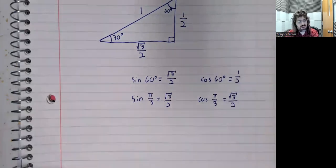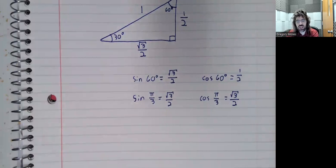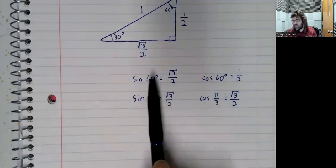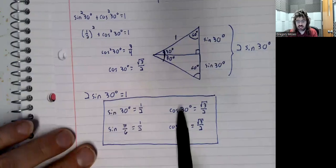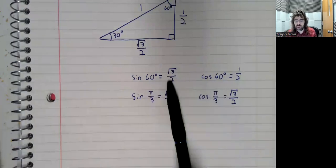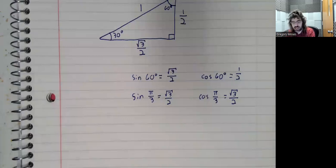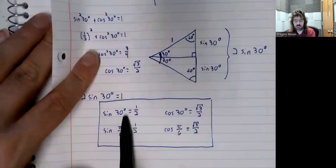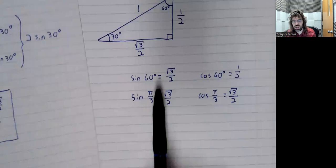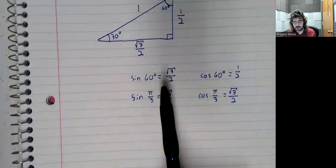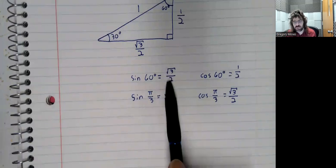So not very nice numbers. I mean, I guess the saving grace here is that this 1 half and the square root of 3 over 2 appear in both the 60 degrees and the 30 degrees. So once you've memorized the sine of 30 and the cosine of 30, you've basically got the sine of 60 and the cosine of 60. You just have to know that they're reversed. That is, the sine of 30 is 1 half, the cosine of 30 is the square root of 3 over 2, versus the sine of 60 is the square root of 3 over 2, the cosine of 60 is 1 half.